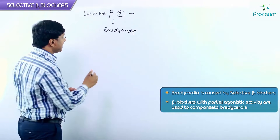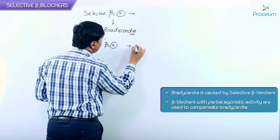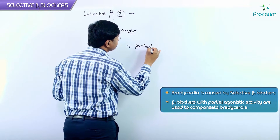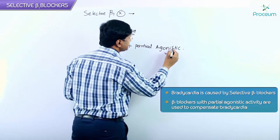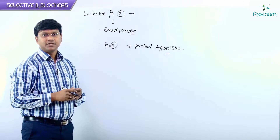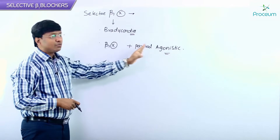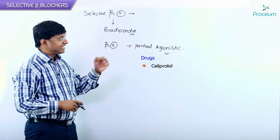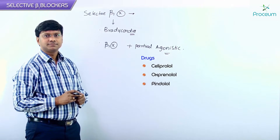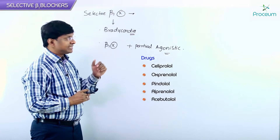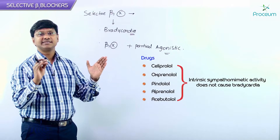In those patients with severe bradycardia, we should use beta-1 blockers which have partial agonistic activity. Drugs with beta-1 blockade and partial agonistic activity include seliprolol, oxprenolol, pindolol, alprenolol, and acebutolol. These are beta blockers with intrinsic sympathomimetic activity — they will not cause bradycardia.